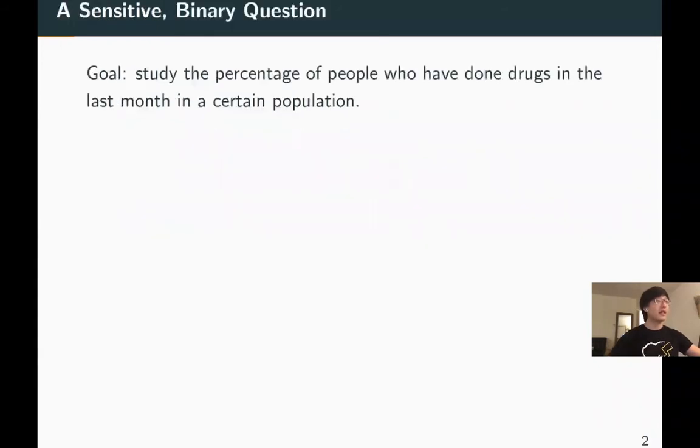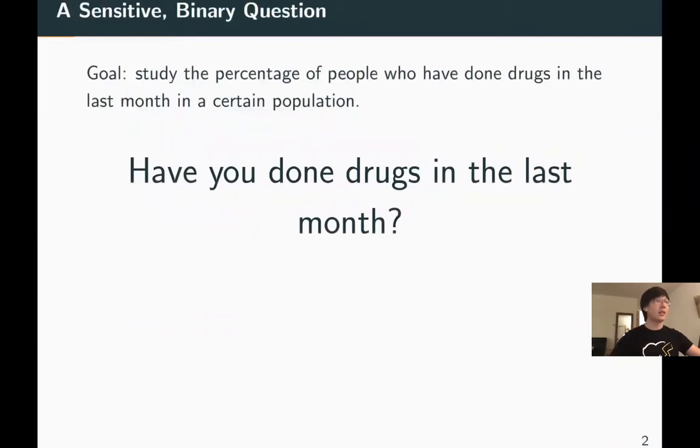Suppose we want to study the percentage of people who have done drugs in the last month in a certain population. One popular way is to conduct a survey on a randomly sampled subset and ask: Have you done drugs in the last month? The answer can be sensitive, so we may need to protect privacy. Simple anonymization will not give strict privacy guarantee.